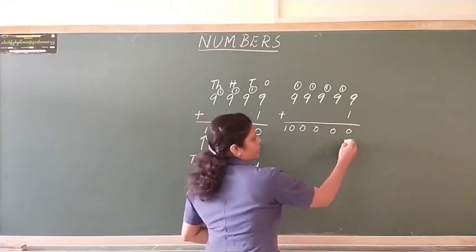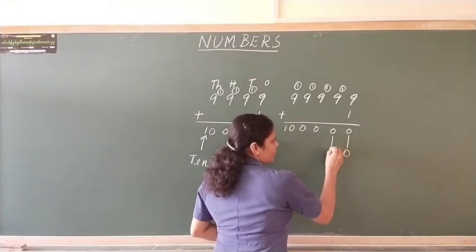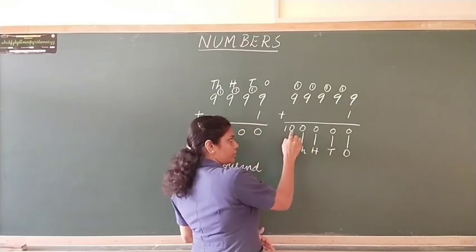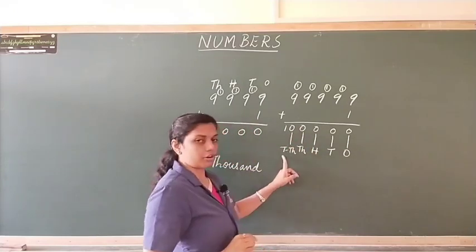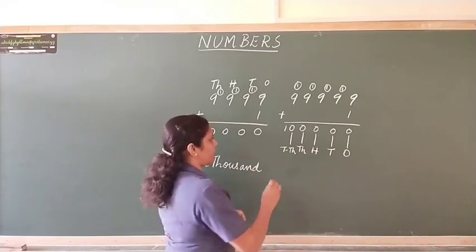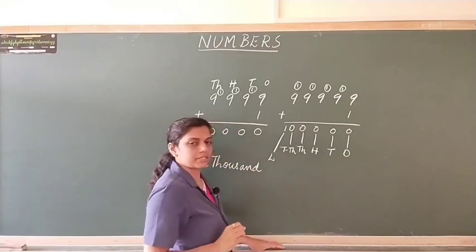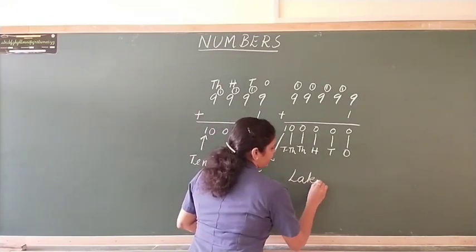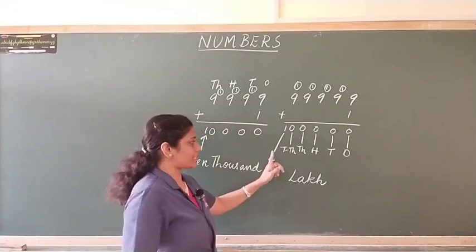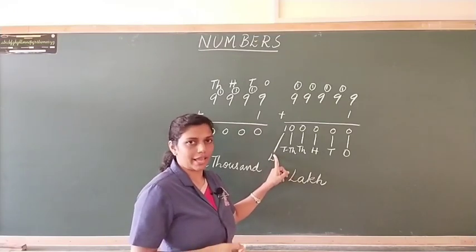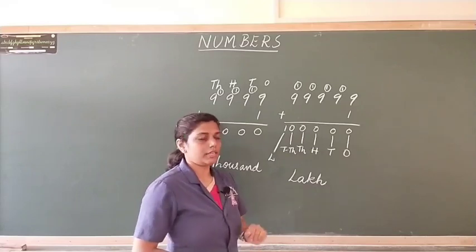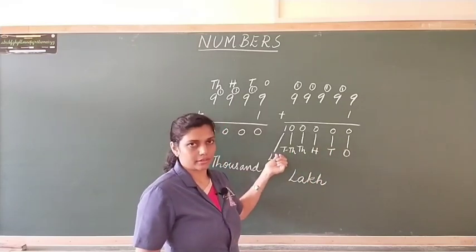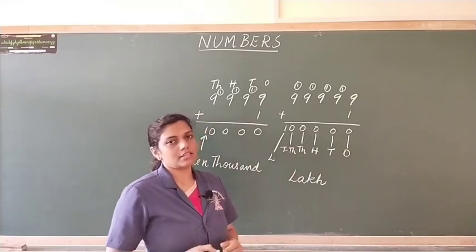So, let us write place values to this. This is 1's place, then comes 10's place, then comes 100's, 1000's. Now we know this is 10,000's and we write it in short form as T-TH and then the 6th place is represented as L and this is nothing but lakhs place. We spell it as L-A-K-H. So, the 6th place is called lakhs place. Then, how do we read this number? It is read as 1 lakh. Again, I repeat it is read as 1 lakh and also this is the smallest 6-digit number.